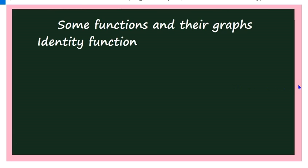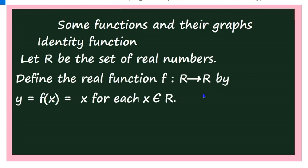Now let us look at the first one: identity function. The question will be asked like this — define the identity function, draw the graph of the function, and also write the domain and range. The function is defined as follows: let R be the set of real numbers. Define the real function f from R to R by y = f(x) = x, for each x belonging to R.